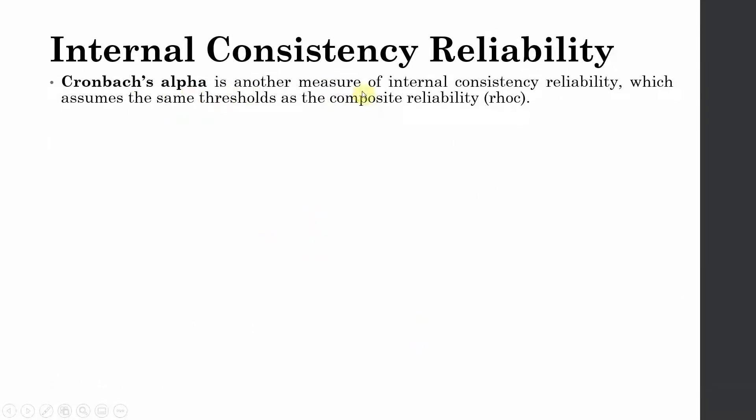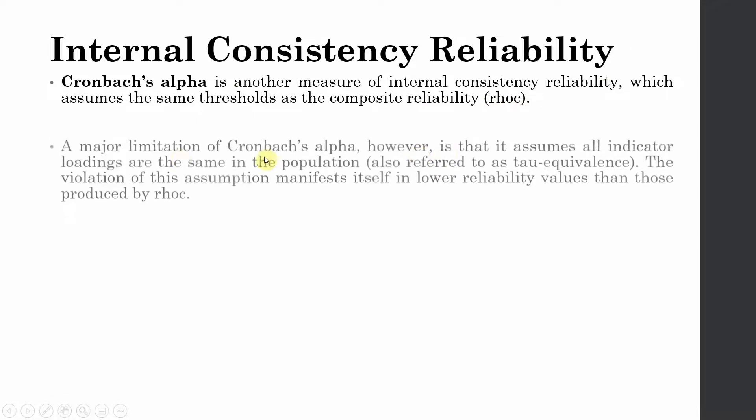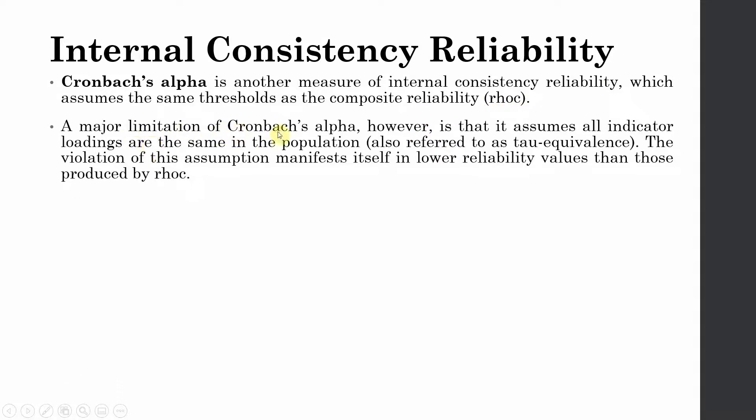Cronbach alpha is another measure of internal consistency reliability which assumes the same thresholds as for composite reliability, i.e., rho C. A major limitation of Cronbach's alpha however is that it assumes all indicator loadings are the same in the population, also referred as tau equivalence. The violation of this assumption manifests itself in lower reliability values than those produced by rho C.